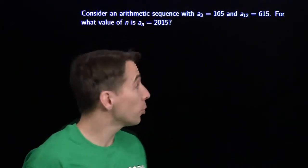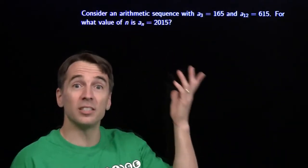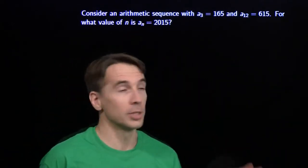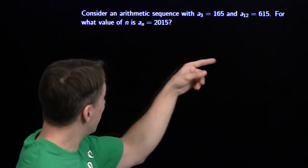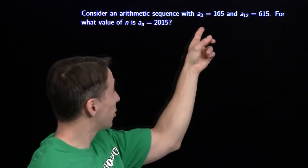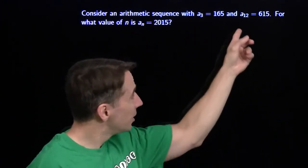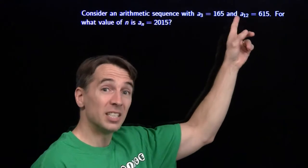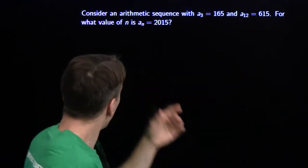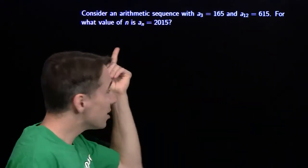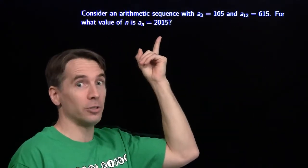In this month's Math Counts Mini, we're going to tackle a couple of arithmetic sequence and series problems. We're going to start right here. We have an arithmetic sequence. The third term is 165, the twelfth term is 615, and we want to find the value of n such that the nth term is 2015.